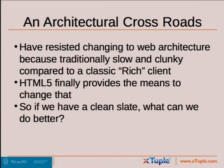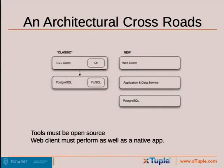That means we get to start from a clean slate, and we asked ourselves: what can we do better than what we're doing now? On the left is our classic client — C++ built with Qt, talking directly to Postgres. With a web client we're basically forced to go to a three-tier architecture with the client, then an application and data service that talks to Postgres. Since we're an open source company, all the tools have to be open source, and the whole point is the web client has to perform as well or better than the native application we have today.